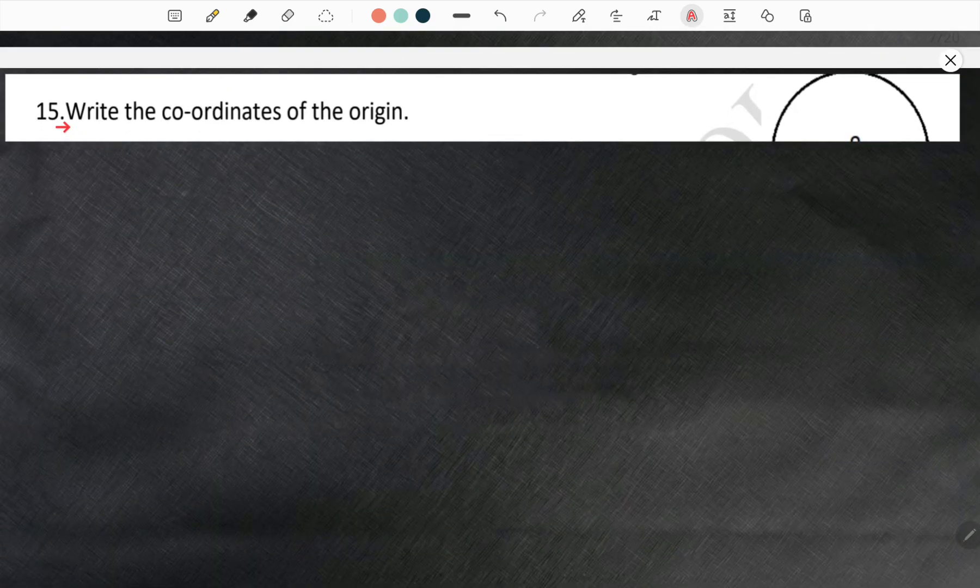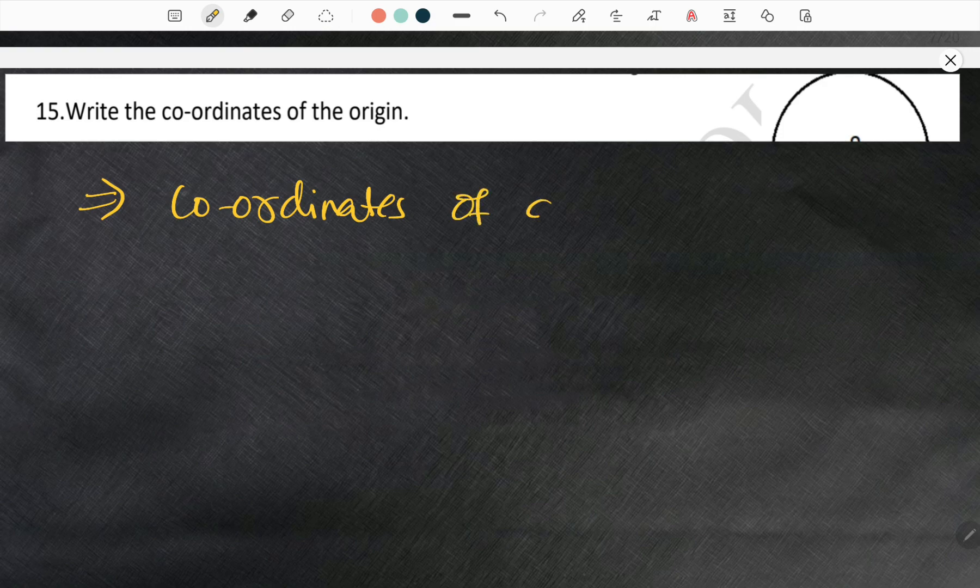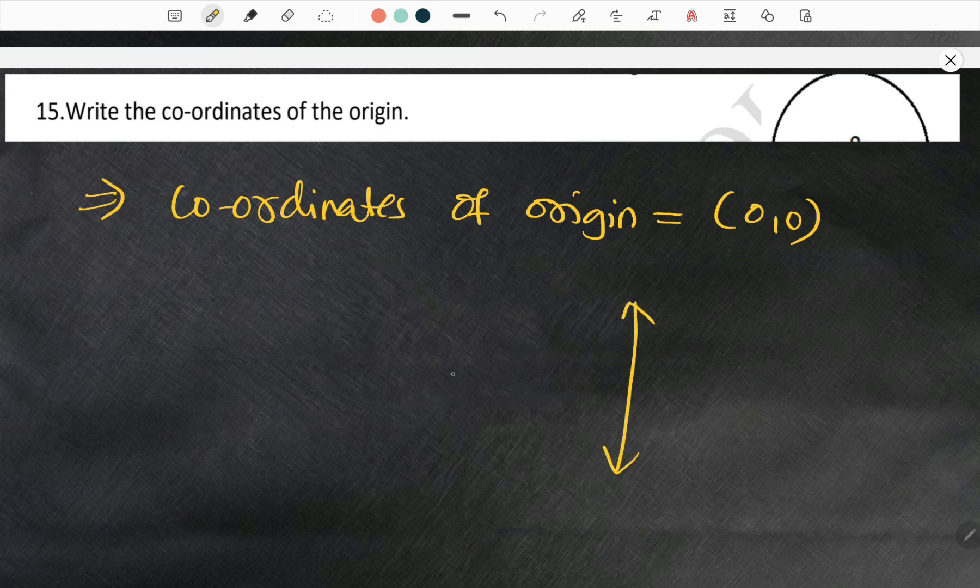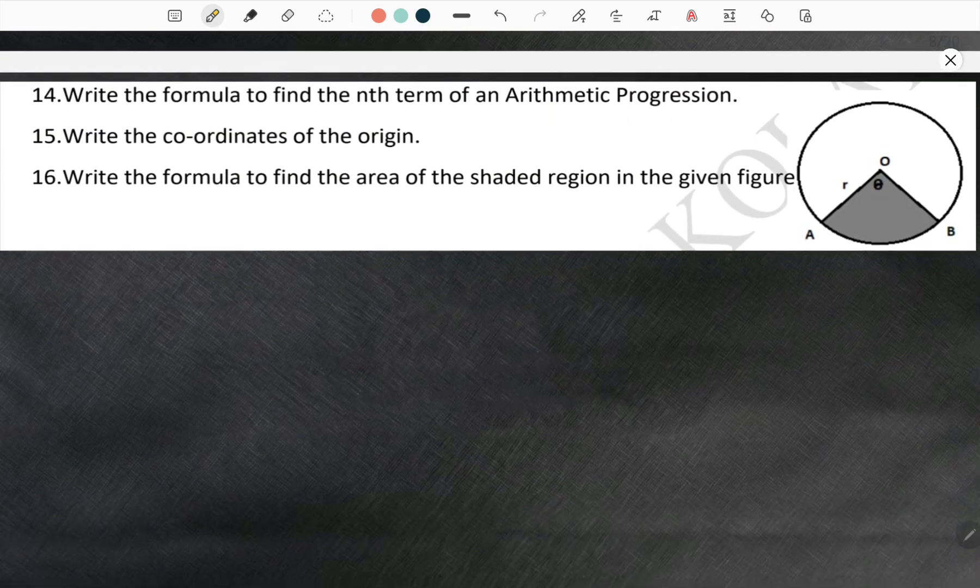Moving forward to the fifteenth question. Write the coordinates of origin. Coordinates of origin is equal to 0,0. You understand origin, right? This is y axis, this is x axis and here is the origin. The coordinates of this is 0,0.